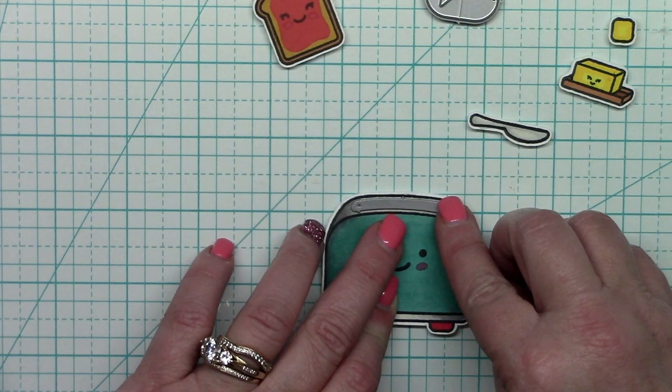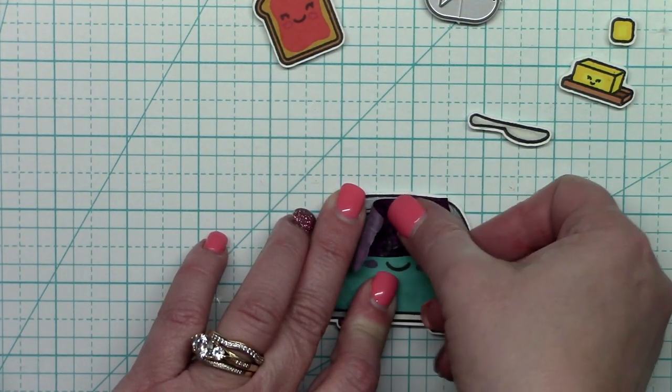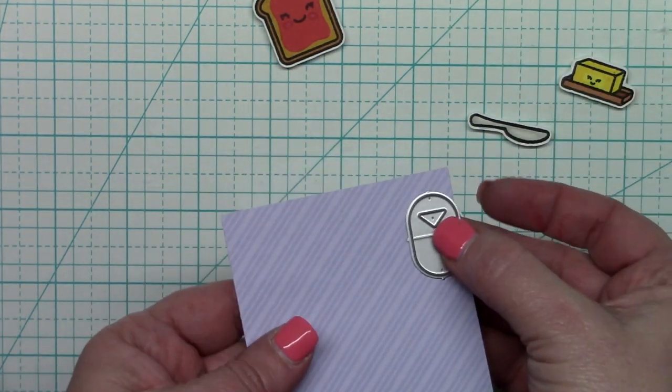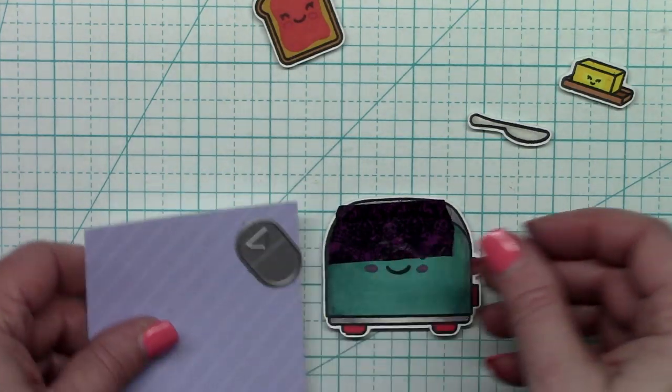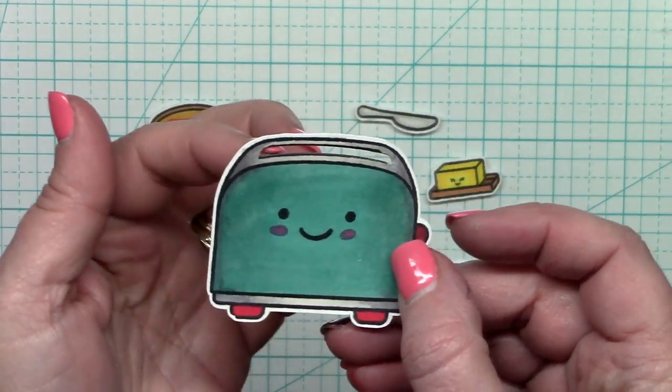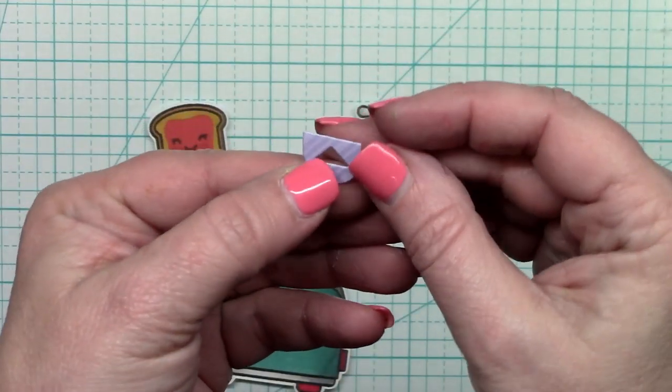Now this little die cuts the slot open on the toaster. So I'll secure that again with a little piece of washi tape just to make sure nothing moves. Now also is this little tab that I'm going to cut out in the purple paper. And that indicates to the recipient that there's something to pull. Now there is the toaster with the slot cut. And here is that tab.